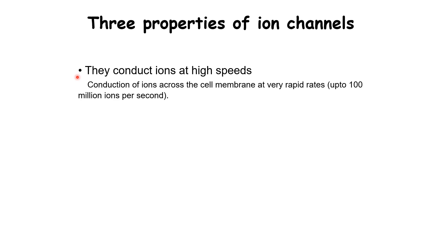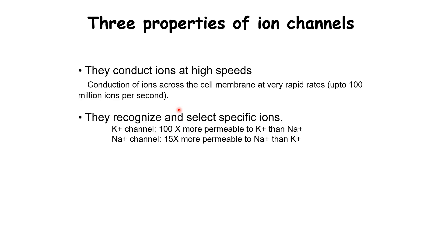The first property is that the channels allow ions to move at very high speeds. A single ion channel molecule may allow up to 100 million ions per second to pass through — a staggeringly large number — much larger than what an active transporter like the sodium-potassium exchange pump can allow. The second property is that ion channels are quite specific to particular ions. For example, the potassium channel allows almost 100 times more potassium ions to pass through than sodium, and similarly sodium channels allow 15 times more sodium ions than potassium ions to pass through.